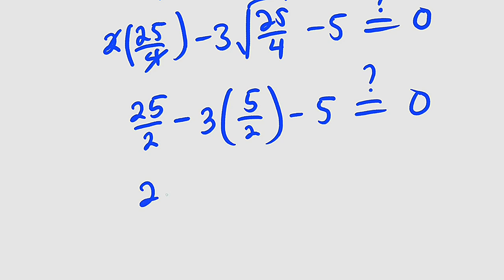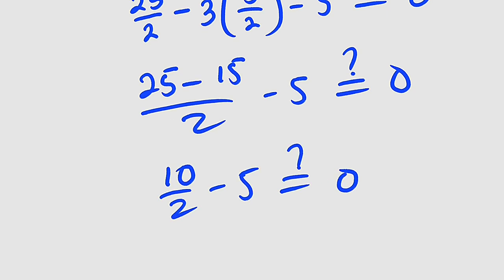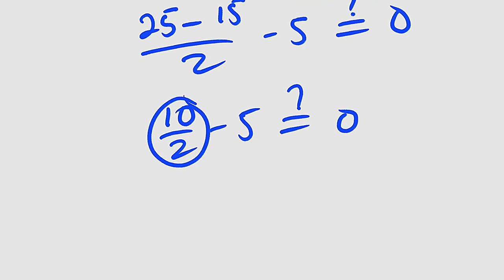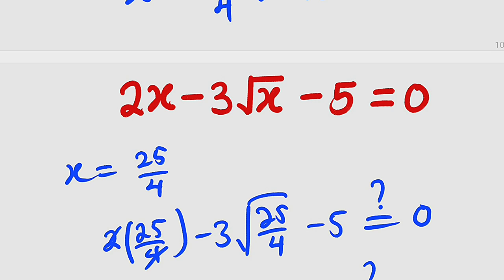3 times 5 is 15. So we have 25 minus 15. If you combine the two fractions, then we have minus 5. Is this equal to 0? 25 minus 15 is equal to 10. So we have 10 divided by 2 minus 5. Is this the same thing as 0? 10 divided by 2 is 5 and 5 minus 5 is 0. Hence, 0 equal to 0, which implies that x equal to 25 divided by 4 is a solution.